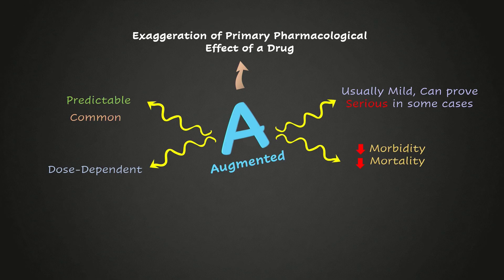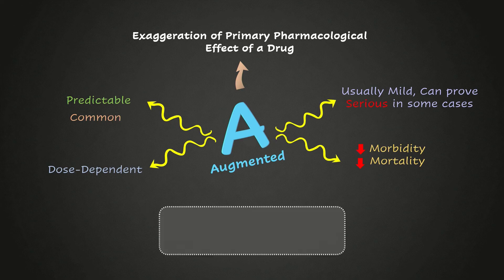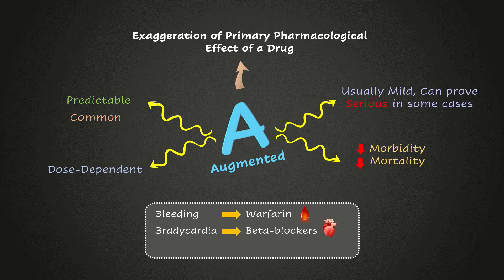Common examples of type A reactions include bleeding caused by warfarin and other anticoagulants. Normally, warfarin is used as an anticoagulant and prevents thrombosis, but excess of everything is bad — over-exaggeration of its response can cause bleeding. The same goes for bradycardia associated with beta blockers and deafness with aminoglycosides.